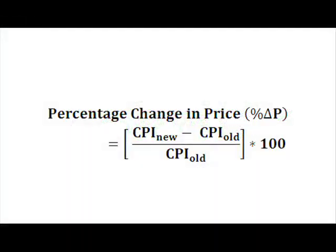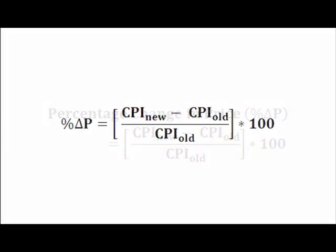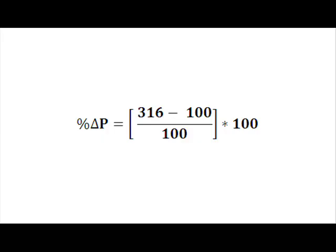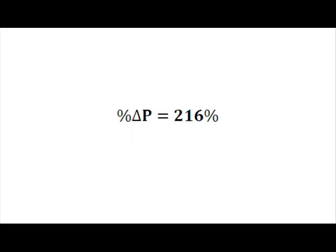We need to look at percentage change of the price index. The formula to calculate the percentage change in the overall price level is the difference between the new CPI and the old CPI, all over the old CPI, times 100, to get it in percentage terms. How do I use this formula? Well, let's use the CPI numbers we calculated earlier as an example. The percentage change in price is the new CPI, 316, minus the old CPI, 100, over 100, times 100, to get it in percentage terms, or an increase of 216%.